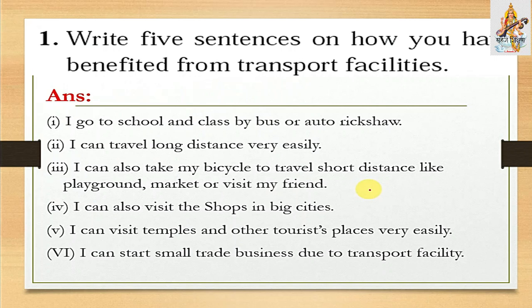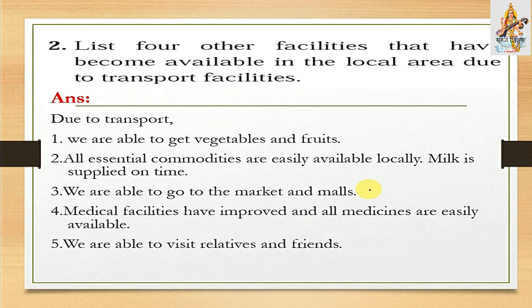Third point: I can also take my bicycle to travel short distances, like to the playground, market, or to visit my friend. Fourth point: I can visit shops in big cities. Fifth point: I can visit temples and other tourist places very easily. And the last point: I can start a small trade business due to transport facilities.